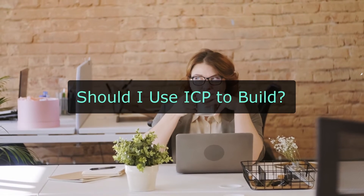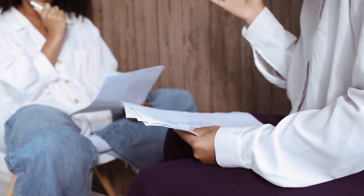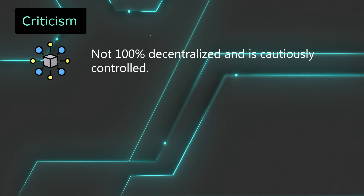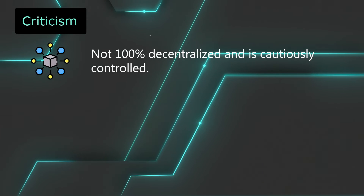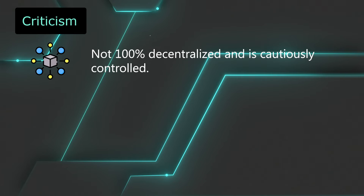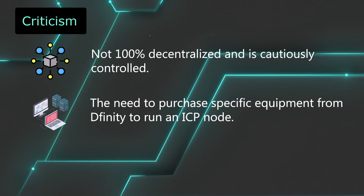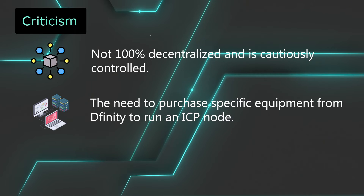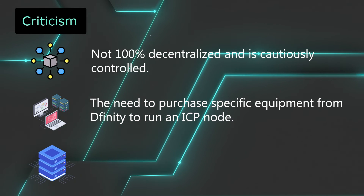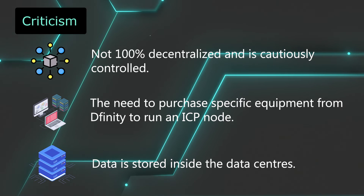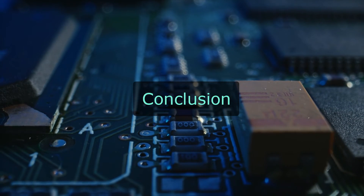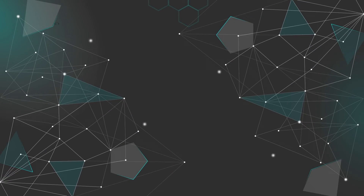Let's not get carried away so quickly with all this hype and claims — there are also things many people are concerned about. As some believe, this protocol is not yet fully decentralized and is cautiously controlled. Some also claim the protocol might be using exclusive code. One criticism is that to become an ICP node, you need to purchase specific equipment from DFINITY, which from a blockchain perspective is pretty centralized. Another question arises: is it safe to keep the data inside data centers, as it could be a point of failure for security breaches? What I believe is that if this criticism is worked upon, this technology would be groundbreaking to the blockchain industry.